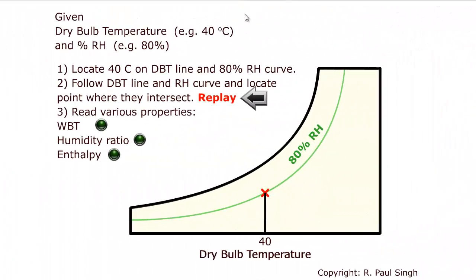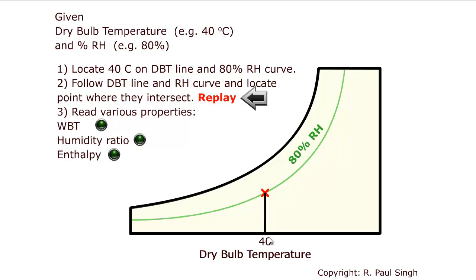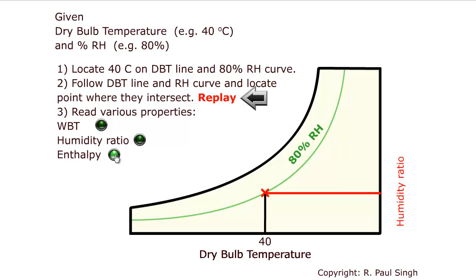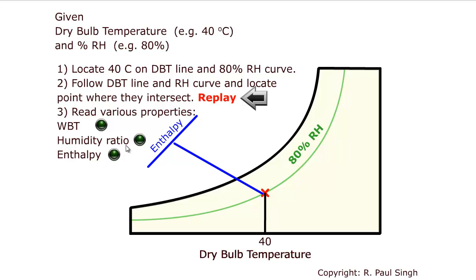Let's look at another example where the dry bulb temperature is 40 degrees C and relative humidity is 80 percent. On the chart we find where the 40 degrees C dry bulb temperature line meets the 80 percent relative humidity curve. From that point, we determine the wet bulb temperature by following the wet bulb line, the humidity ratio by following the horizontal line, and the enthalpy by following the constant enthalpy line — which is the same as the wet bulb line.